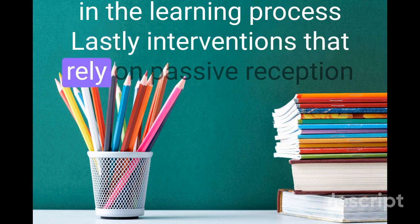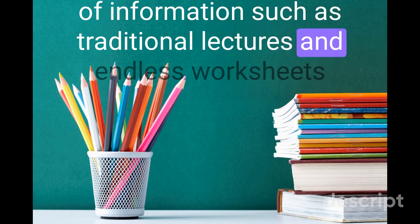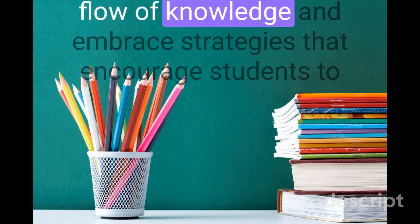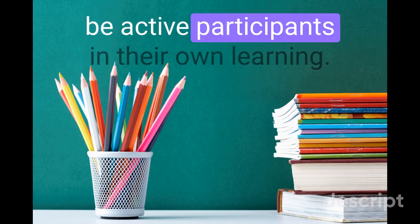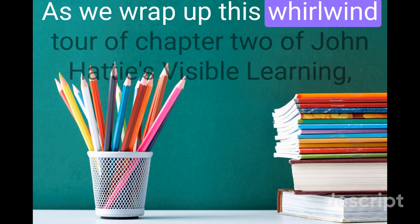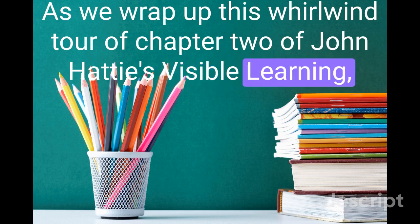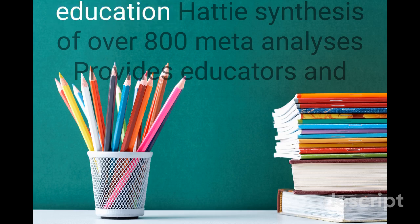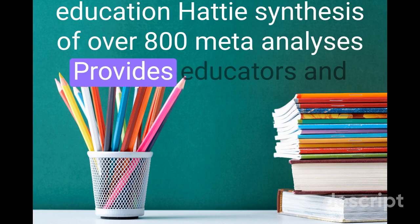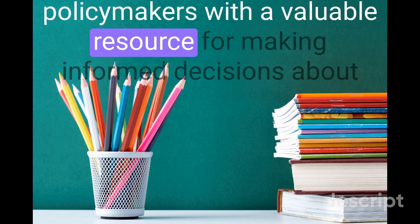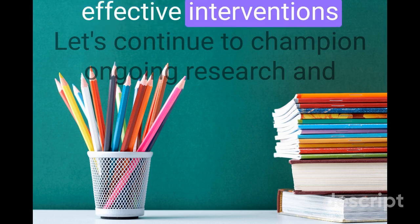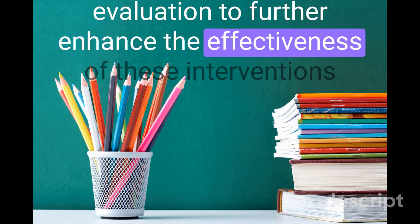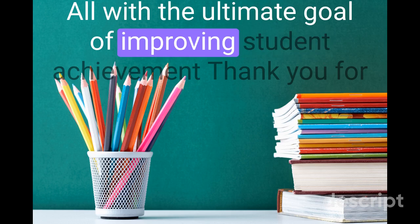Lastly, interventions that rely on passive reception of information, such as traditional lectures and endless worksheets, have proven to be less effective. It's time to move away from a one-way flow of knowledge and embrace strategies that encourage students to be active participants in their own learning. As we wrap up this whirlwind tour of Chapter 2 of John Hattie's Visible Learning, it's crucial to emphasize the significance of evidence-based practices in education. Hattie's synthesis of over 800 meta-analyses provides educators and policymakers with a valuable resource for making informed decisions about effective interventions. Let's continue to champion ongoing research and evaluation to further enhance the effectiveness of these interventions, all with the ultimate goal of improving student achievement.